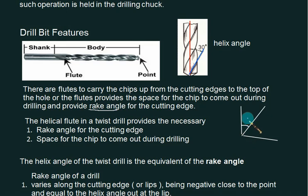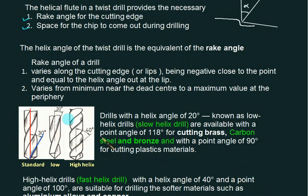This angle is called the rake angle and is equal to alpha. The helical flute in a twist drill provides the rake angle of the cutting edge and the space for the chip to come out during drilling. The helix angle of the twist drill is equivalent to the rake angle. Rake angle varies along the cutting edge or lips, being negative close to the point and equal to the helix angle out at the lip.